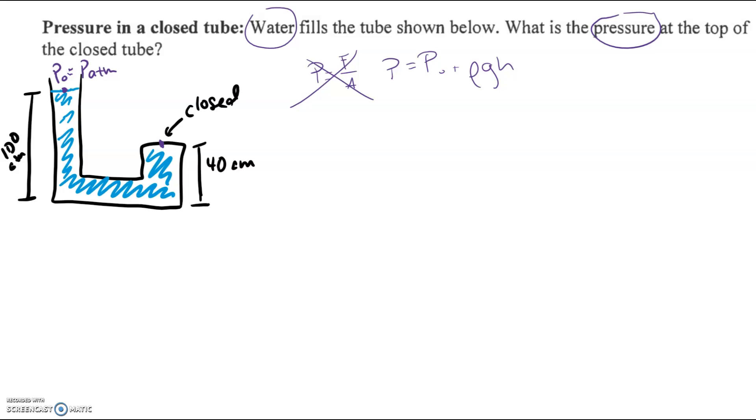So what we can do here is, since we have learned if the water is still, then any horizontal line that we sketch out is going to have the same pressure value. So the pressure at the top of the closed tube, let me draw a dotted line over, is going to be the same value as the pressure at that location there. So we're going to compute the pressure at that location.